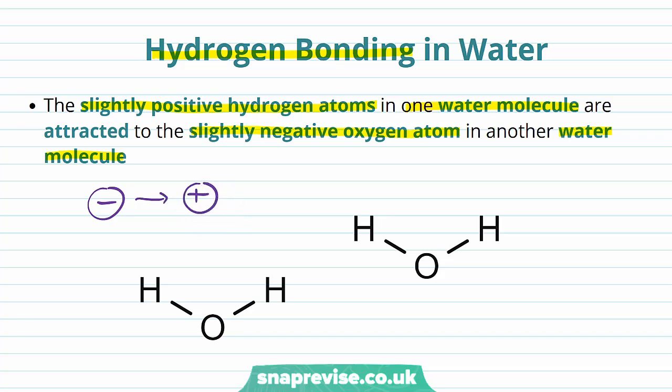For every single water molecule, we have this delta positive area at the hydrogens and we have the delta negative area at the oxygen. Because of this, we've got positives and negatives, and they're going to start attracting each other. What we can form is a bond between positive hydrogens and negative oxygens, and this is known as a hydrogen bond.